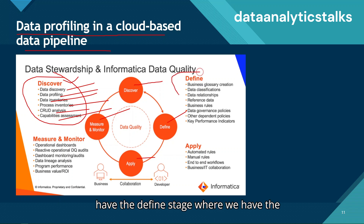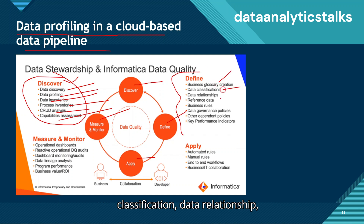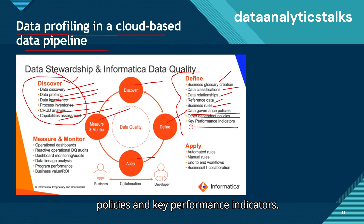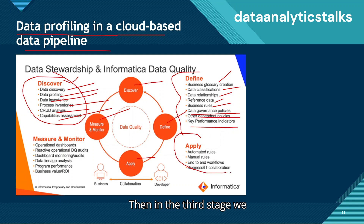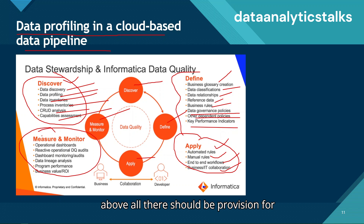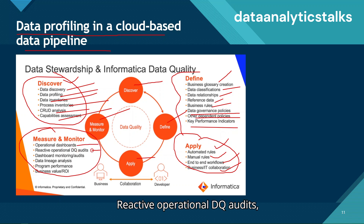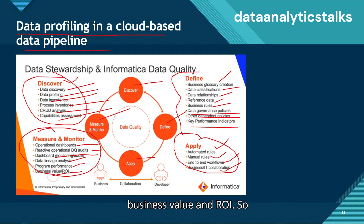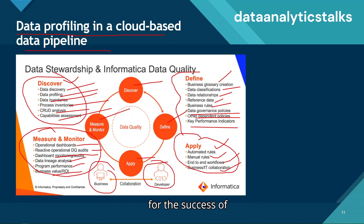In the define stage, activities include business glossary creation, data classification, data relationships, reference data, business rules, data governance policies, and key performance indicators. In the apply stage, automated rules, remediation rules, and end-to-end workflows with cross-team collaboration are implemented. Finally, there should be provision for monitoring and measuring effectiveness through operational dashboards, active DQ audits, data lineage analysis, program performance tracking, and business value and ROI measurement — requiring collaboration between business and development teams.